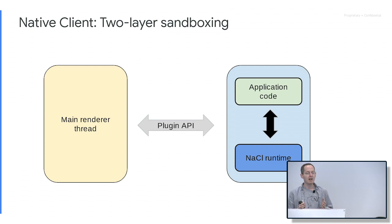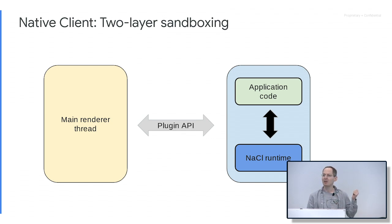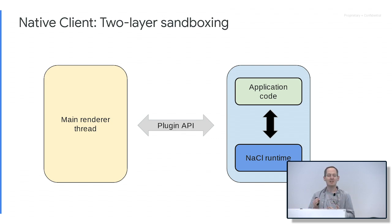Safety is really a super high priority here. You're running content that people are sending over the network; you don't know what it is, so you have to be very careful. NaCl had two layers of sandboxing. One is what you see in application code: by running in a subset you can prove is safe, that's one layer. The other layer is that all that code can do is communicate with the NaCl runtime, and that process is sandboxed as well — so you have a second layer of sandboxing.